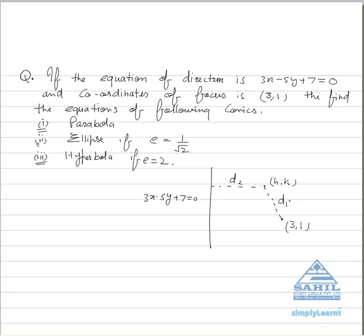And we have to find out the equations of parabola, ellipse and hyperbola. We know that for parabola the eccentricity is equals to 1. For ellipse e equals 1 by root 2, obviously it must be less than 1 but greater than 0, and for hyperbola e equals 2.